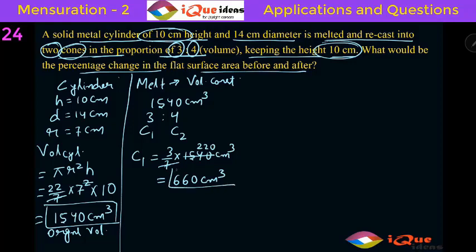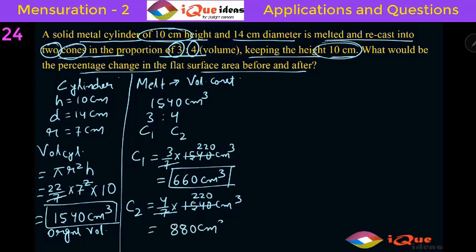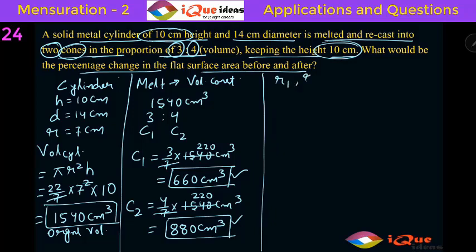So the first cone has volume 660 centimeter cube. Similarly, the second cone C2 is 4 by 7 into 1540 — 7 cancels 1540 giving 220, and 220 into 4 is 880 centimeter cube. So now we have the volumes of both the new cones. Next we need to find the radii of the cones. Let the radius of the first cone be R1 and the second be R2. The height of both cones is 10.